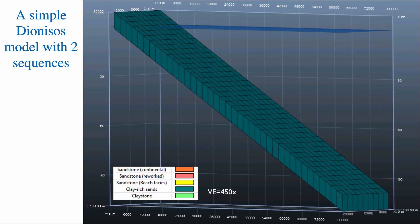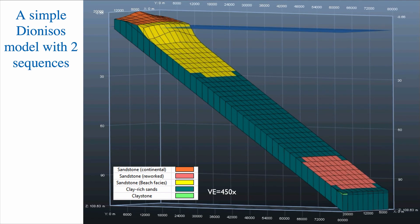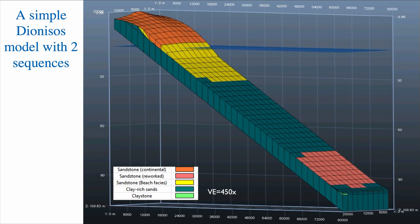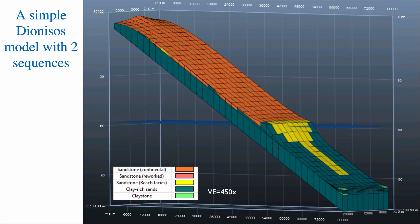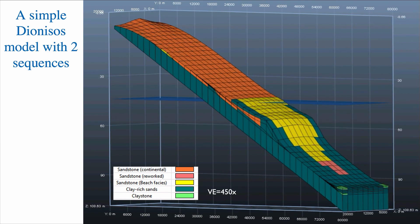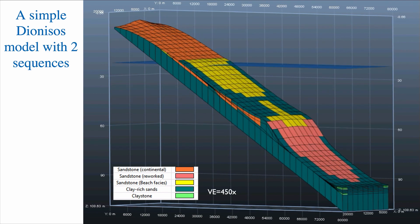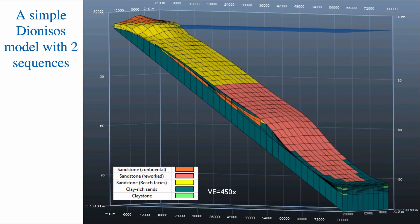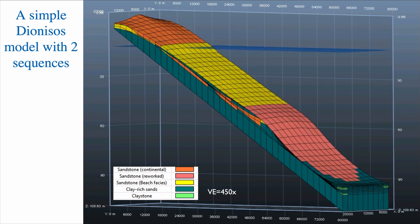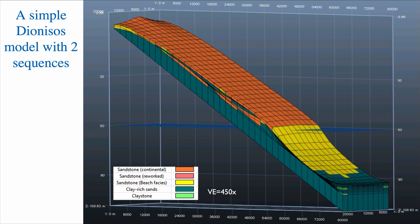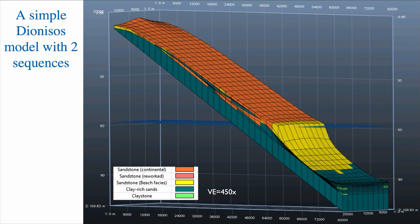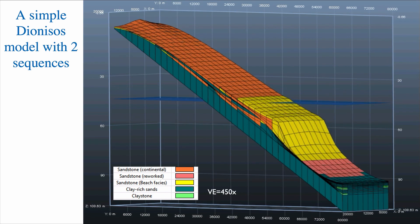Are you ready? Let's look at this model. Here we have this ramp situation again, very similar to before. Notice that we have sand accumulating — sea level goes down at first, and then sea level goes back up. The movie will loop, so we'll have a chance to look at it again. That's the second cycle: sea level goes down, and then sea level goes back up again.